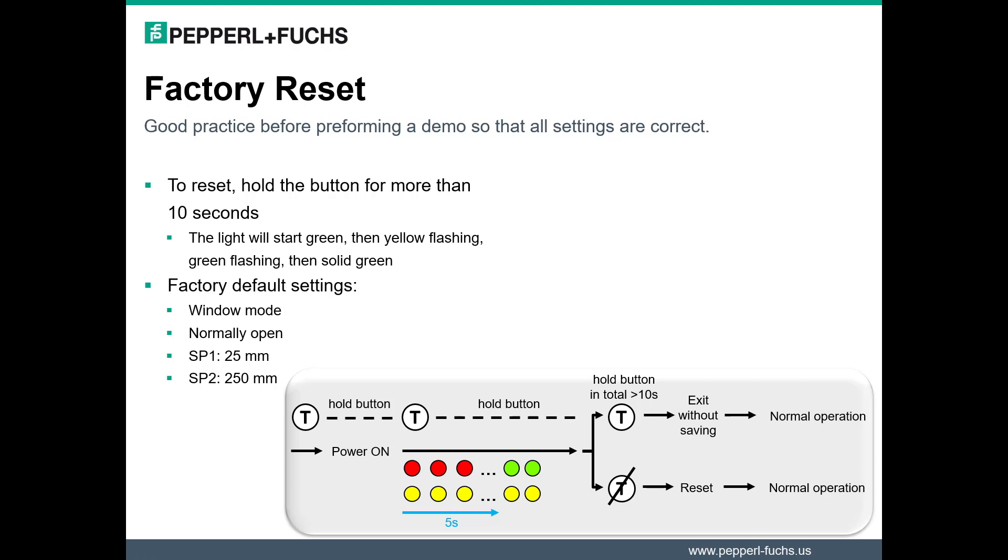Once it is solid green, you can release the button and the sensor will have been reset. The default settings of the sensor are window mode, normally open, and then switching points at 25 and 250 millimeters.